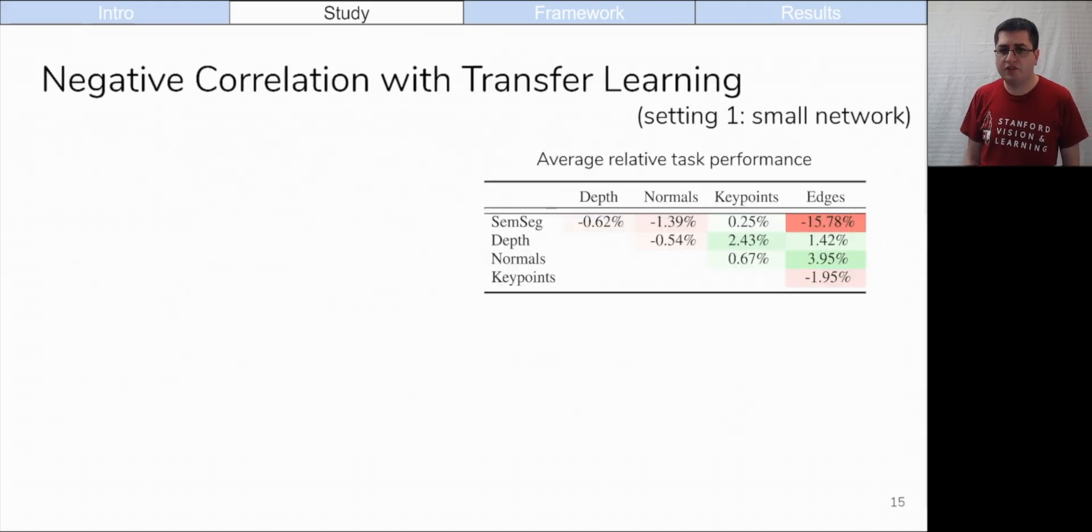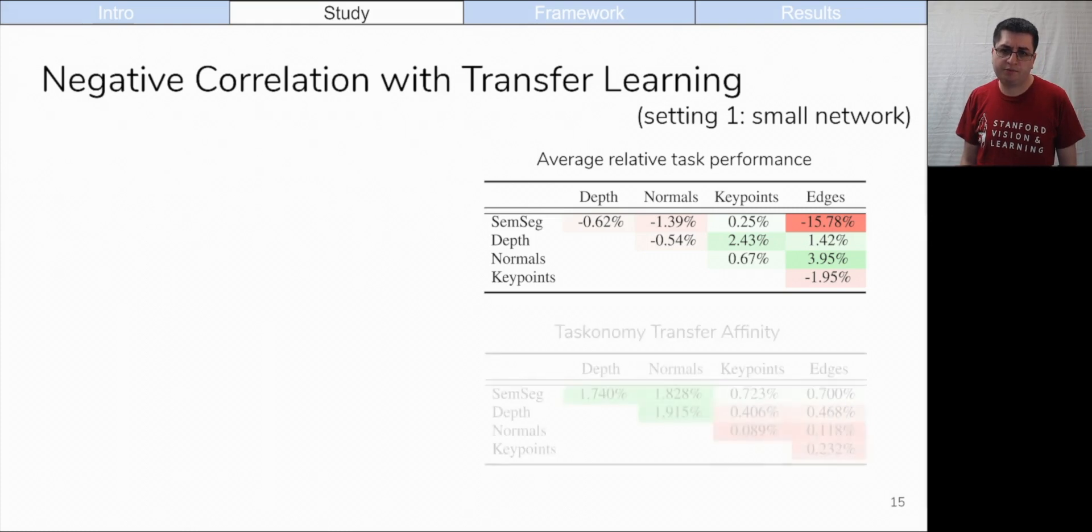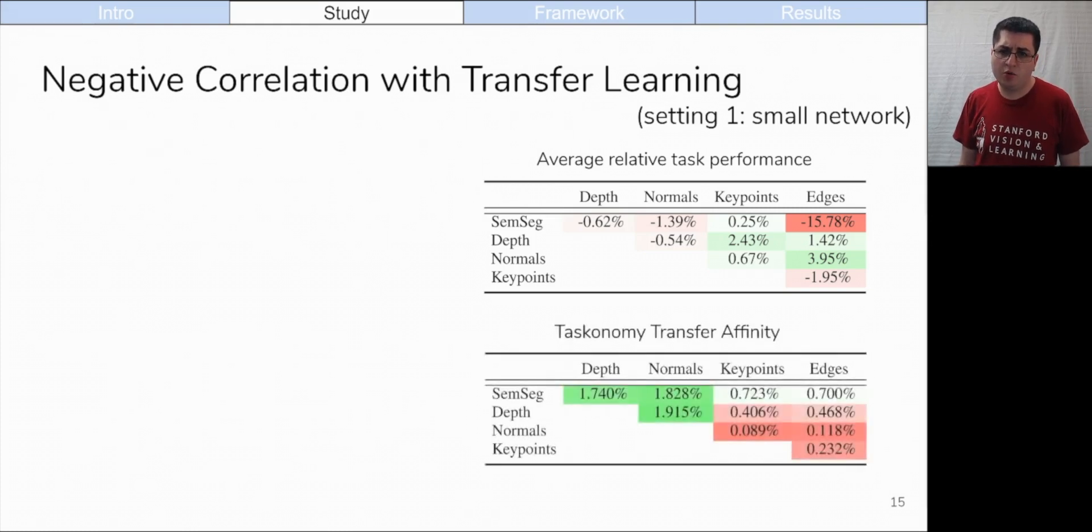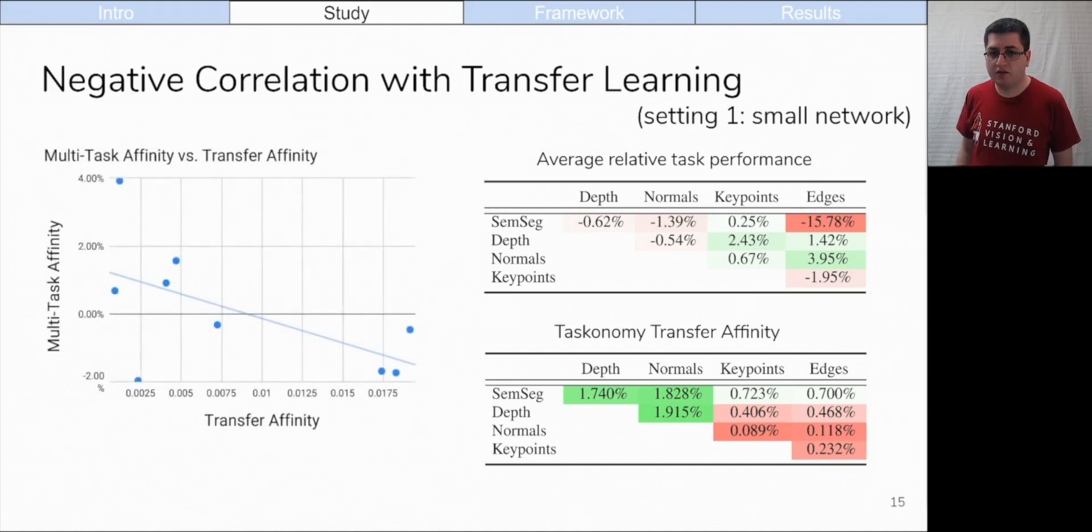By taking the average of that matrix and its transpose, we can get a measure of task affinity. We can compare this with the task affinity published in taskonomy for transfer learning. We would expect to see a strong positive correlation between these two, but we don't see that in this data. This means that transfer learning relationships are not a good indicator of multi-task relationships.